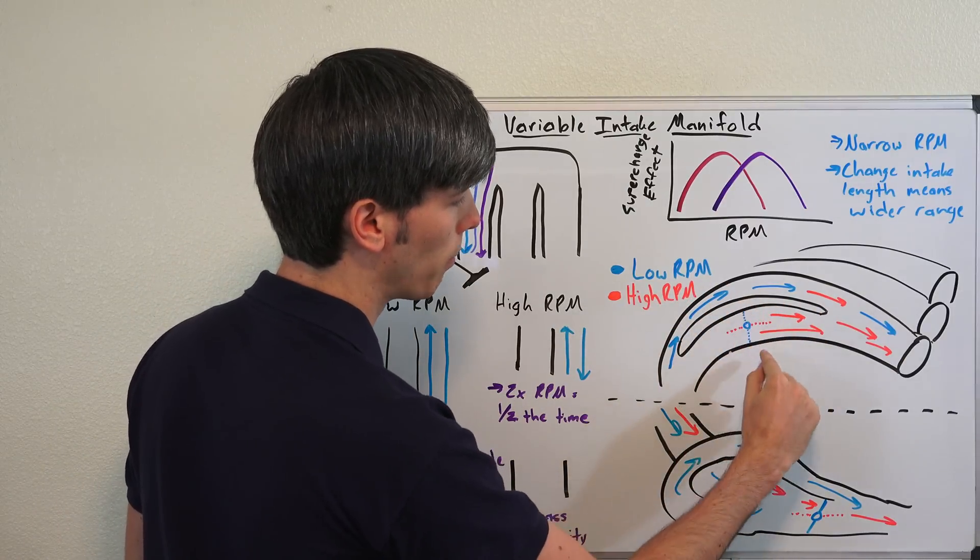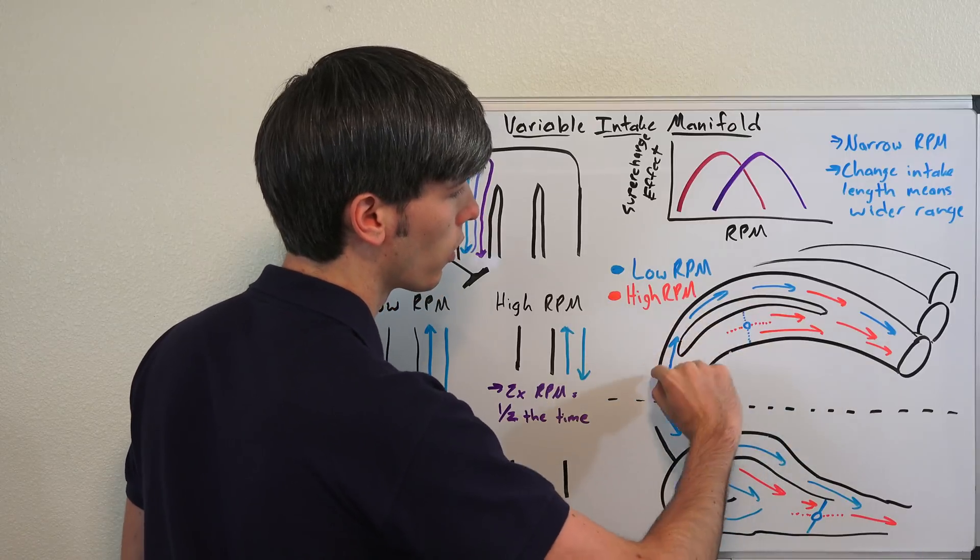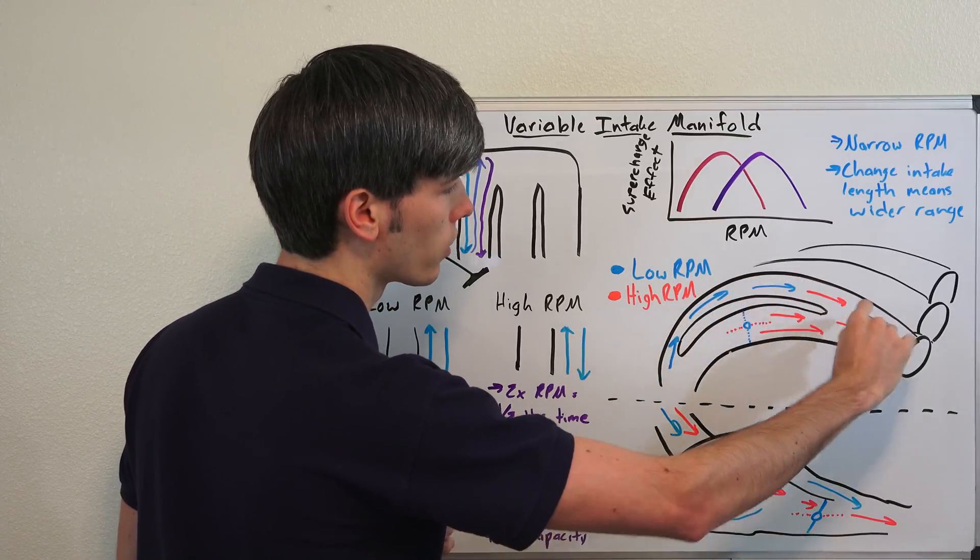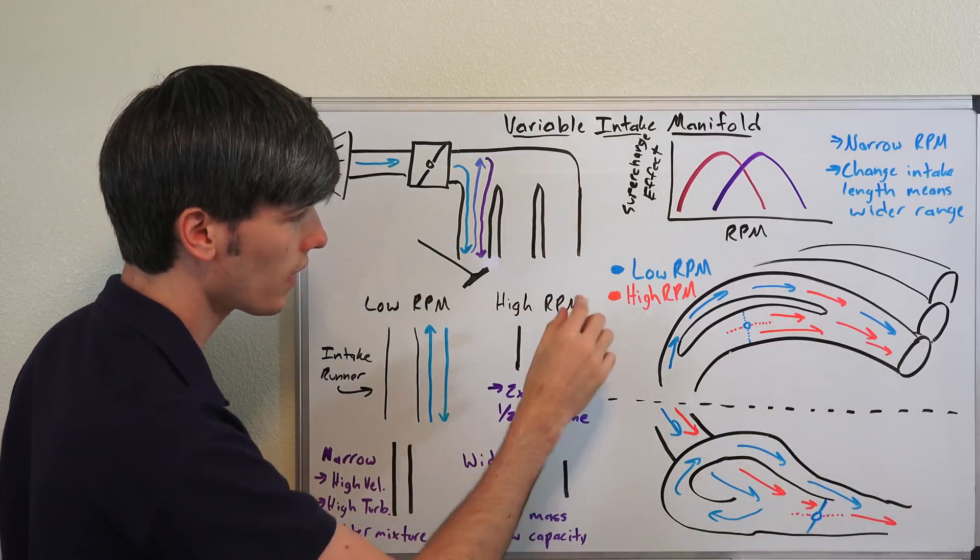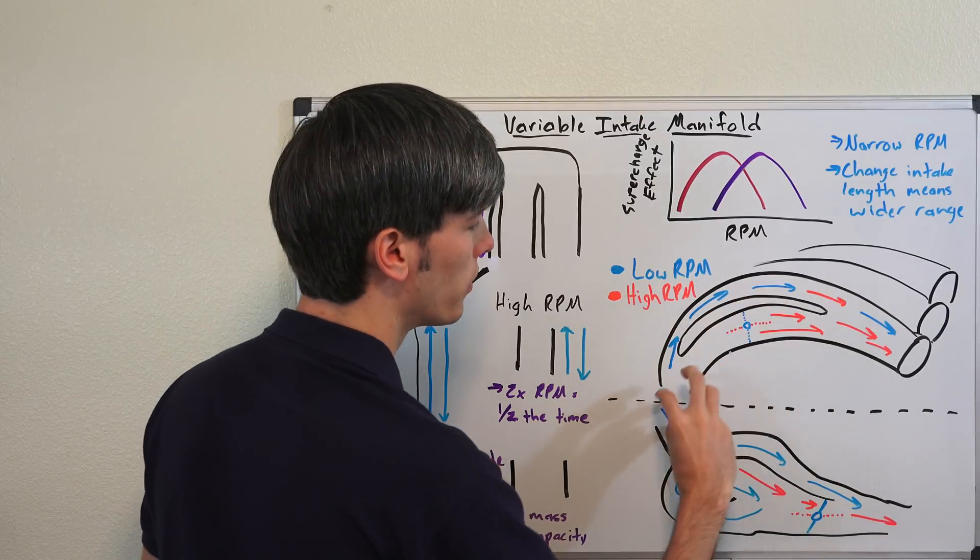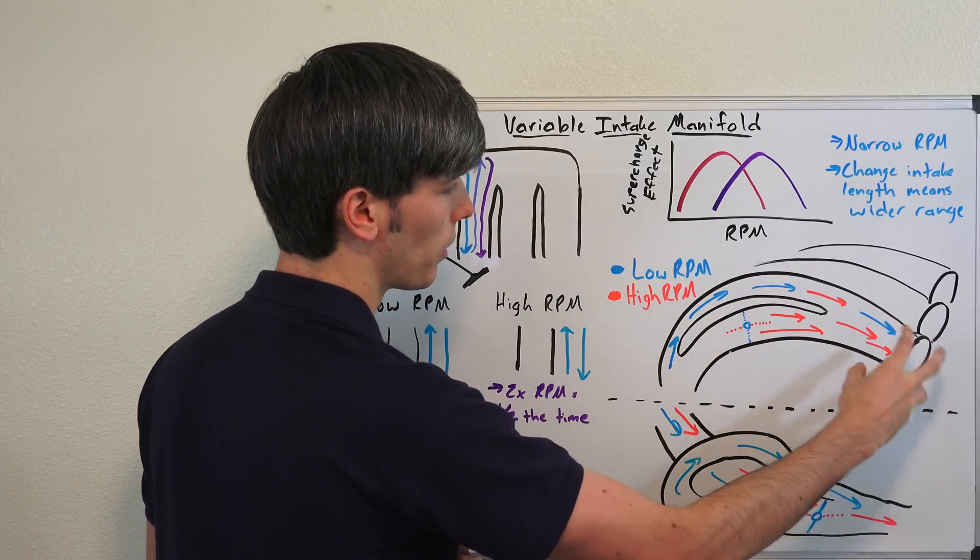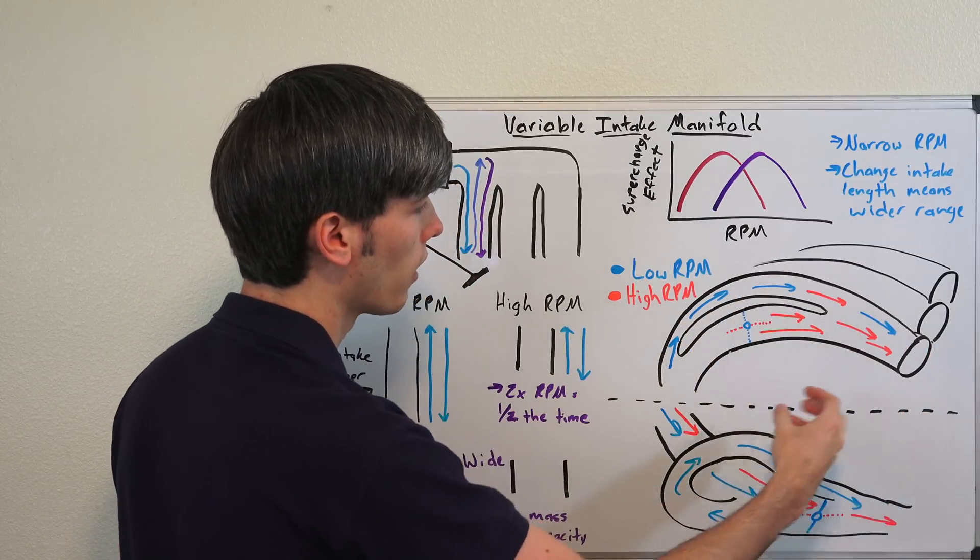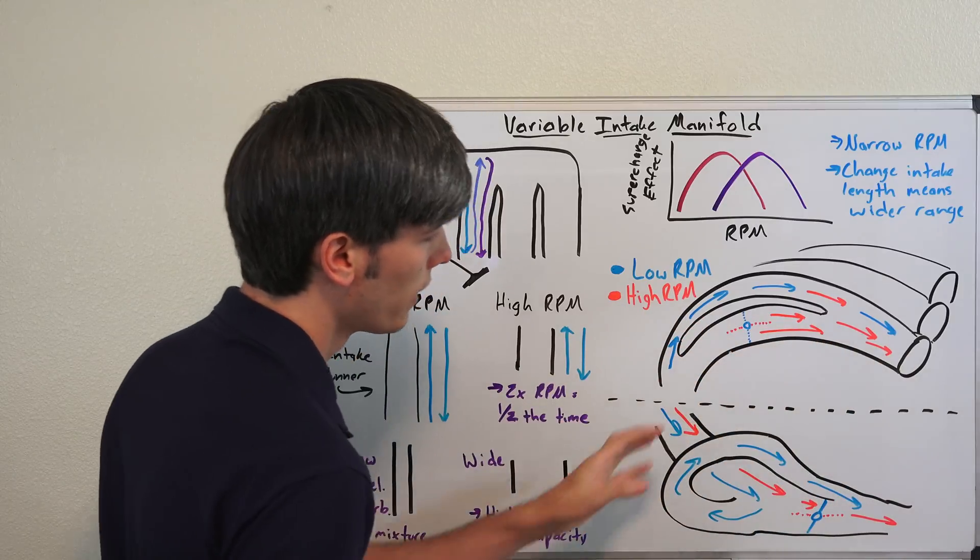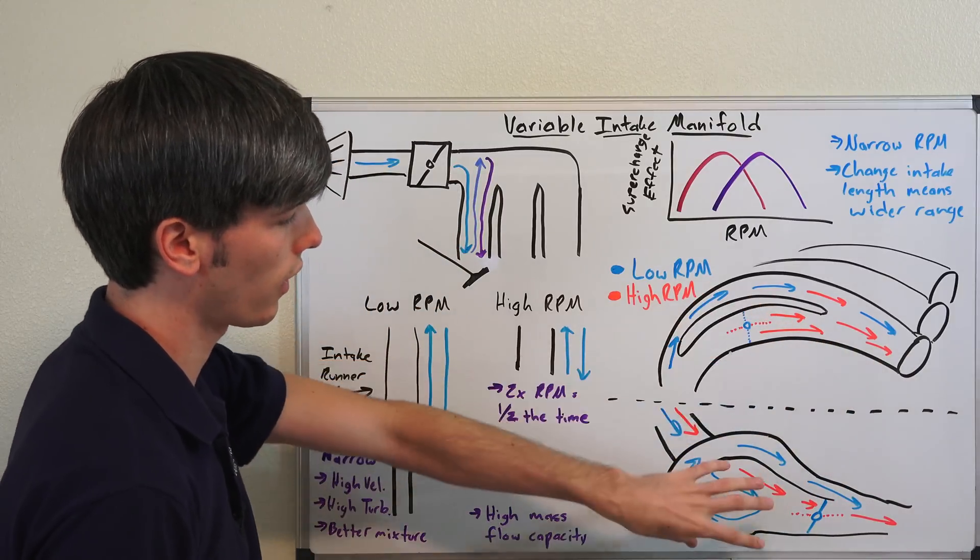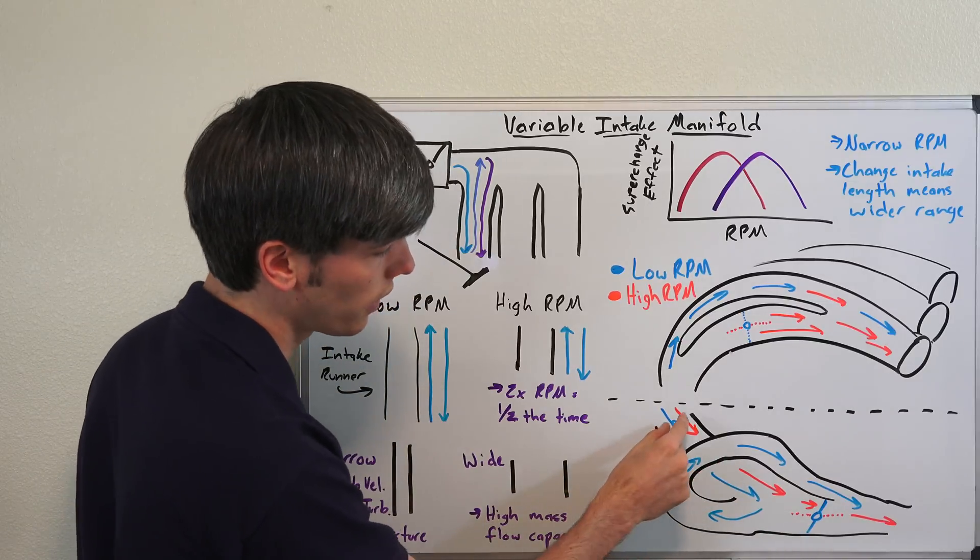Which is going to close off this lower portion, so all the air is forced to go through this long narrow section. So we can get a high velocity and you can make decent power at low RPM. Then once you get to high RPM this valve right here opens up and you can use all of this to bring in air, so much more air, and it's going to have a shorter distance right here. Now this one doesn't change distance as much as some of the other methods, so this for example right here.